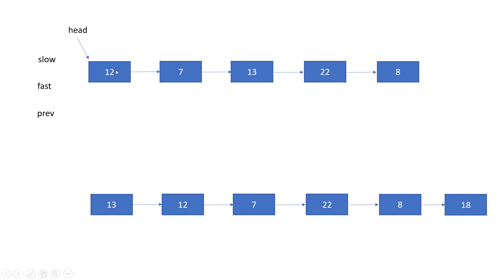Take the example when we have odd nodes. At the start, slow and fast both point to the head node. Slow moves one position and fast moves two positions. Again, because fast.next is not null and fast.next.next is not null, fast moves two more positions and slow moves one more position. Now slow is at 13 and fast is at the last node. Since fast.next is null, the loop ends and slow is at the middle position.